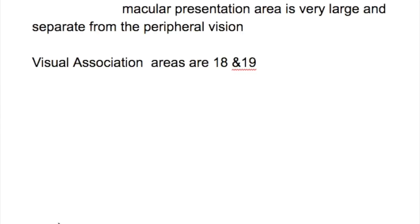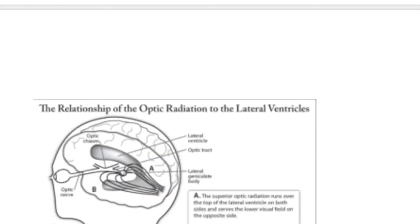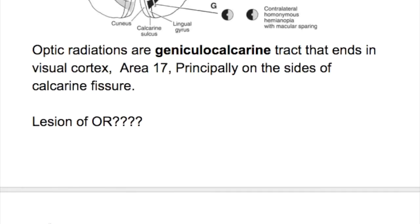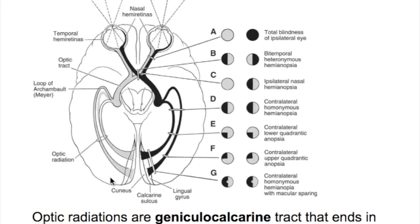How do you differentiate a blind eye from a lesion in the optic nerve versus the occipital lobe? Bilateral occipital lobe destruction produces blind eyes. If the optic nerve is destroyed, it involves only one eye and the light reflex is absent — if blindness is due to optic nerve involvement before the optic chiasma. But if the destruction is in the occipital lobe bilaterally, then the pupillary light reflex will be present.